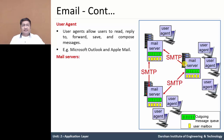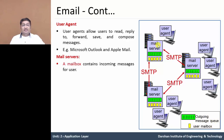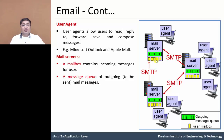Now let us look at the mail server. After composing from the user agent, it sends the mail to the sender mail server. The mail server has two components: first is the outgoing message queue, and second is the user mailbox. The mailbox contains incoming messages from the user agent, and the outgoing queue holds outgoing messages which will be sent to the recipient mail server.